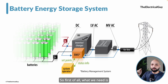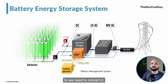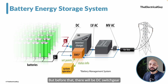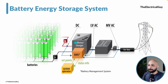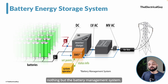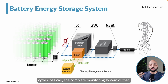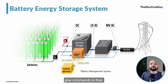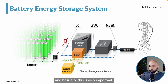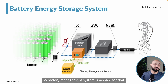First, we need an inverter because the batteries hold DC energy, which must be converted to AC. Before the inverter, DC switchgear is also needed since we are talking about huge power in kilowatts and gigawatts. We also need a BMS — a Battery Management System — which tracks the health of the batteries, their charging and discharging cycles, and provides complete monitoring. The BMS enables two-way communication between the system and the operator, which is critical to safe operation.